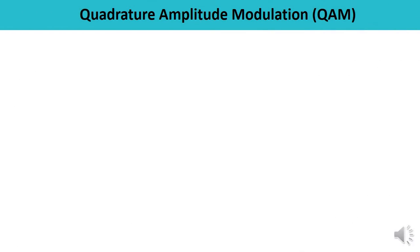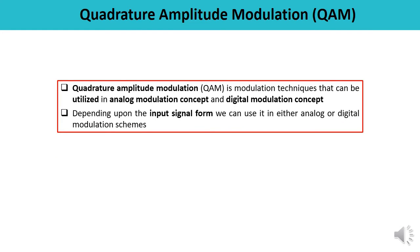What do you understand by quadrature amplitude modulation or QAM? Quadrature amplitude modulation is a modulation technique that we can utilize in analog modulation as well as in the digital modulation concept. So it could be utilized in both cases. Depending upon the nature of the input signal, we can use it in either analog or digital modulation schemes.